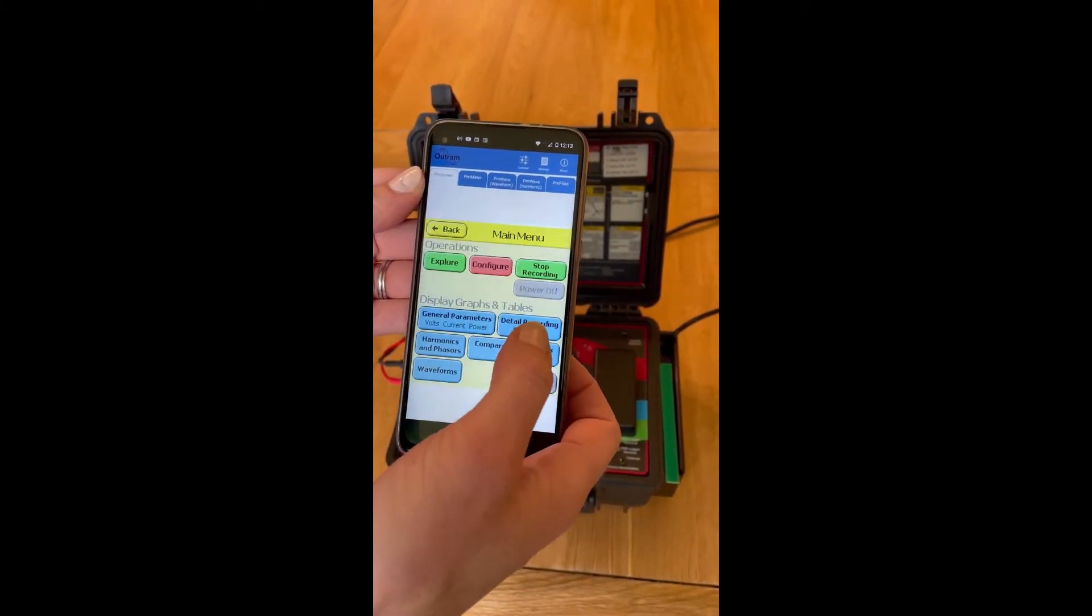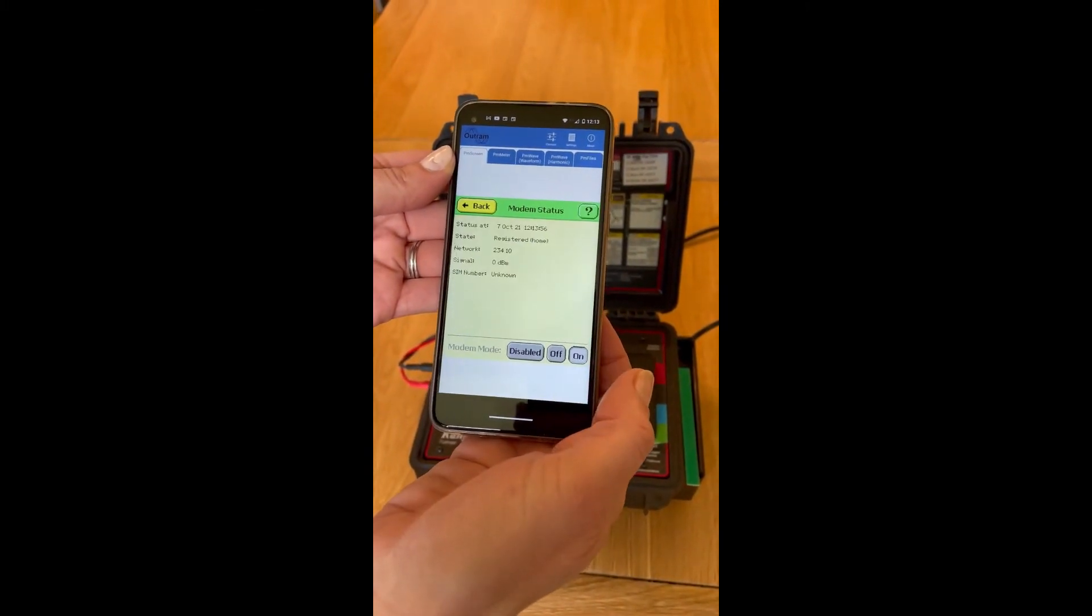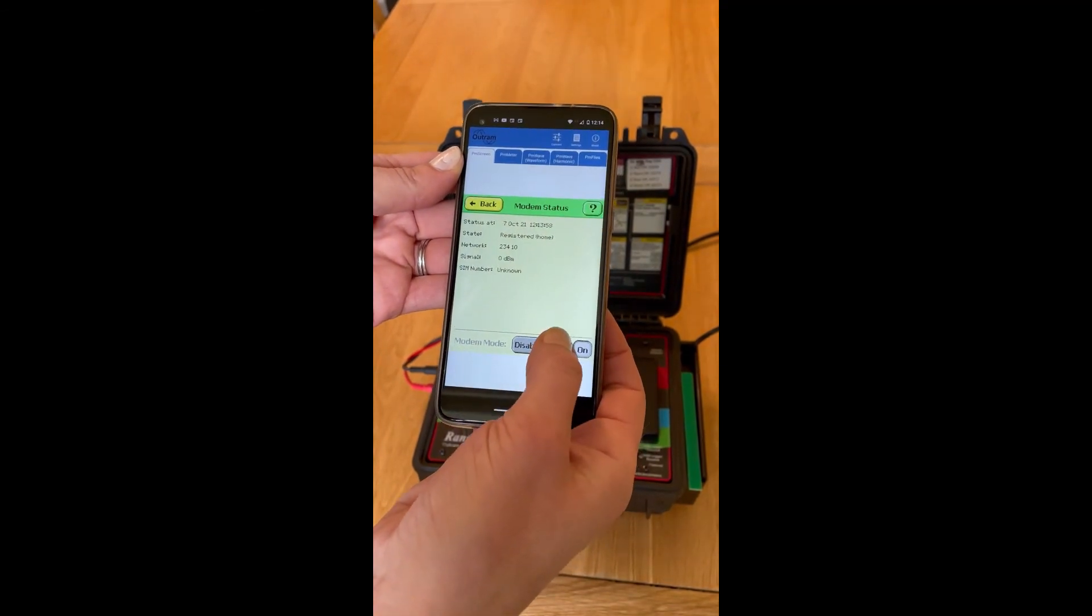Click on the main menu, configure, utilities, and the modem status button here, at which point you can turn the modem off.